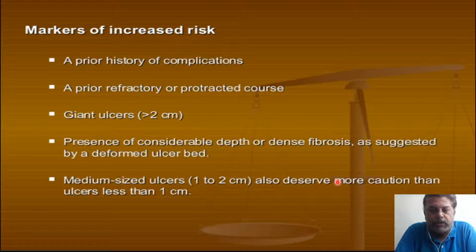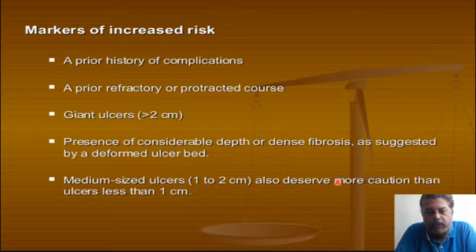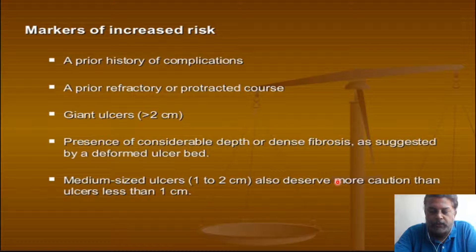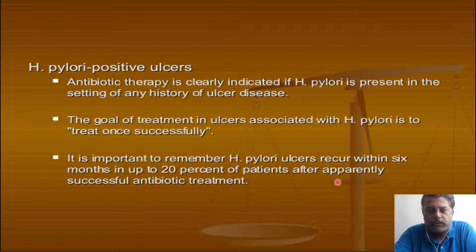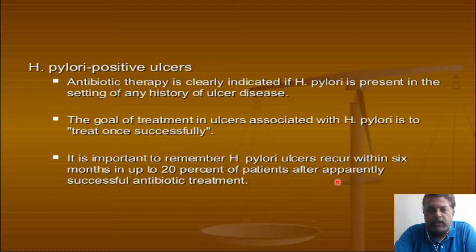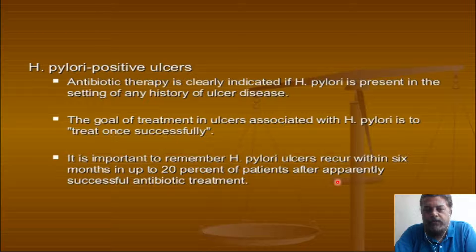A giant ulcer more than two centimeters on endoscopy, or the presence of considerable depth or dense fibrosis, or a deformed ulcer bed deserves more caution. An ulcer one to two centimeters in size also deserves more caution than an ulcer less than one centimeter. If the patient is H. pylori positive, we have to give triple therapy for a prolonged course to clear the infective organism.